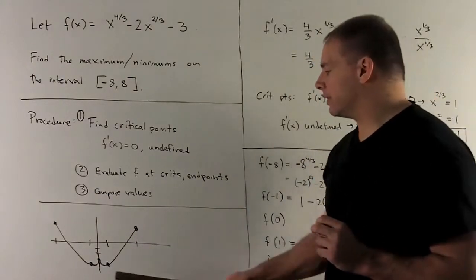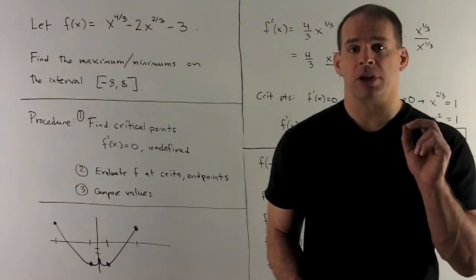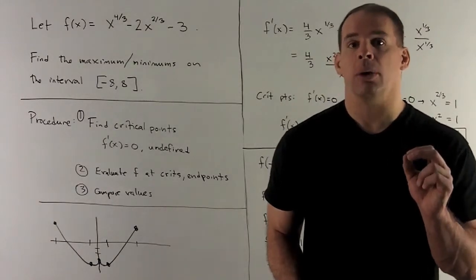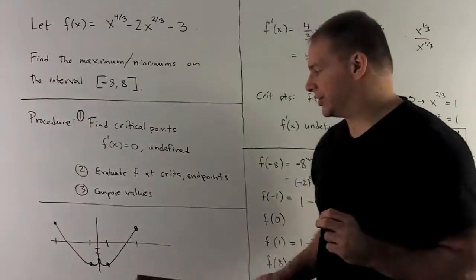The minimums are going to occur at these points here where we have horizontal tangent lines, where the derivative is equal to 0.